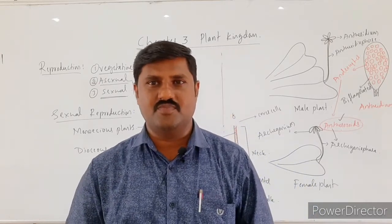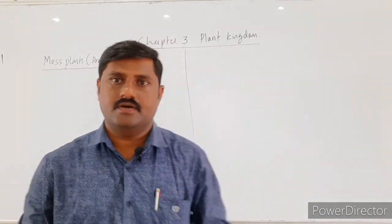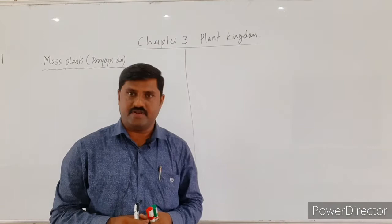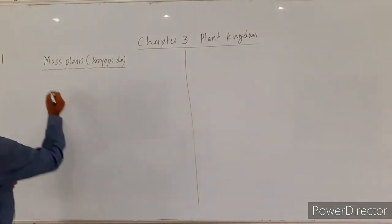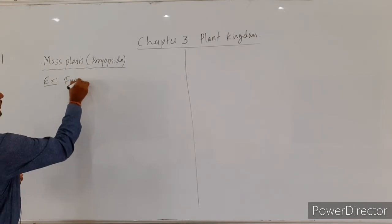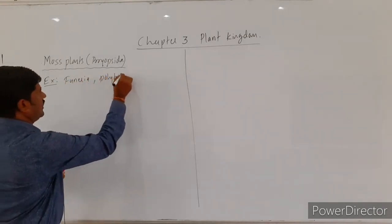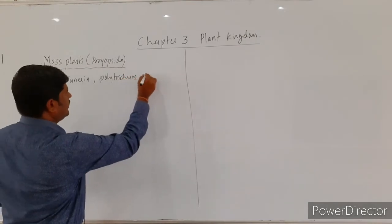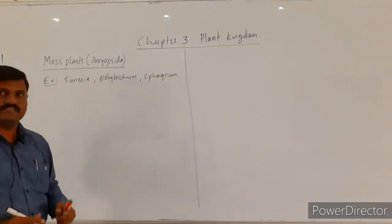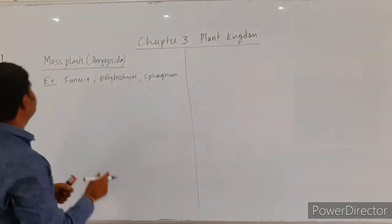Next one is moss plants — Bryopsida or Musci. The best examples for this are Funaria, Polytrichum, and Sphagnum.